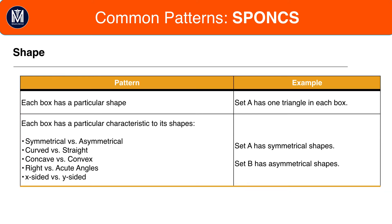Starting with Shape. Shape patterns are to do with the particular shapes and features of shapes that you see in each box. For example, each box could have a particular shape — Set A could have a triangle in every box, whereas Set B could have a circle in every box. Alternatively, the pattern could be to do with a particular characteristic of the shape, such as symmetrical versus asymmetrical, curved versus straight, concave versus convex, right versus acute angles, or X-sided versus Y-sided.